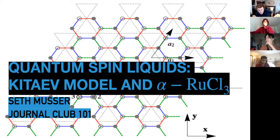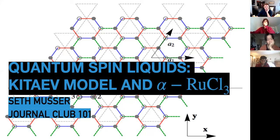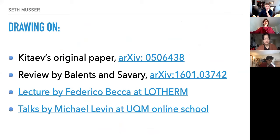I think I'll begin then. Thank you to everyone attending. I am Seth Musser. Hopefully by the end of today you'll be tired of me talking and looking forward to Robert talking next week on deconfined quantum criticality. This week I am going to be talking about more quantum spin liquids — specifically the Kitaev model and one of the candidate materials, alpha ruthenium trichloride.